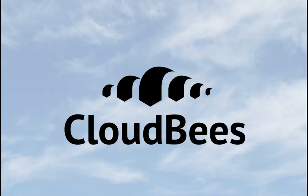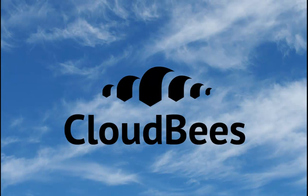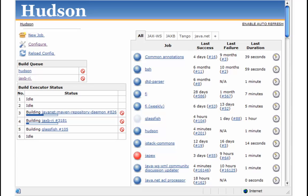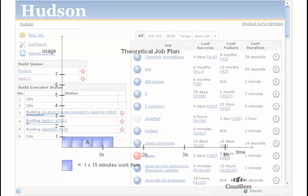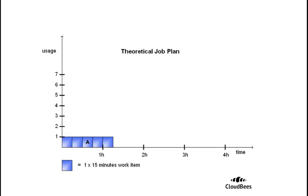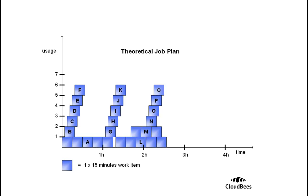In this short video, you'll discover how CloudBees can simplify your development and continuous integration using the power of the cloud. When configuring your Hudson jobs, you typically shouldn't have to think about how they will end up being executed. You just define what you need to be done and what the triggers are. That gives you a theoretical job plan.